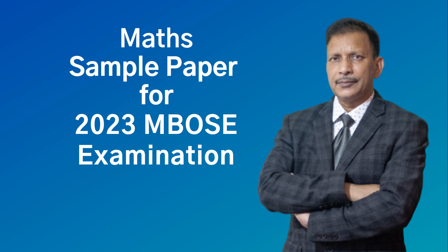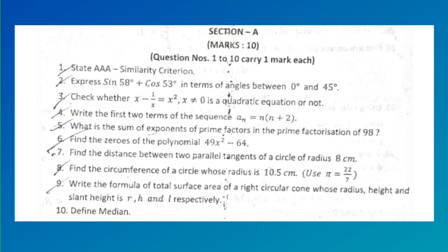Question 1: State AAA similarity criterion and express sin 58° + cos 53° in terms of angles between 0° and 45°. Check whether x - 1/x = x², x ≠ 0 is a quadratic equation or not. Write the first two terms of the sequence aₙ = n(n+2). What is the sum of exponents of prime factors in the prime factorization of 98?